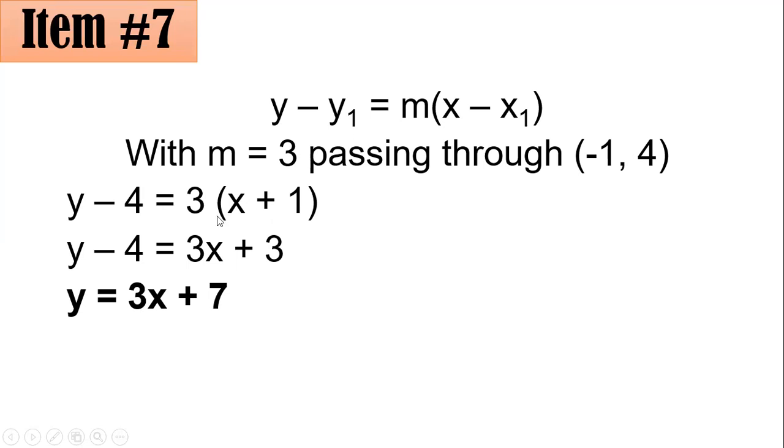Using the distributive property, so 3 multiplied to x plus 1, so 3 times x will be 3x, 3 times 1 will be plus 3. Hence, you have y minus 4 equals 3x plus 3, and adding both sides by 4, we have the equation y equals 3x plus 7. Letter C.